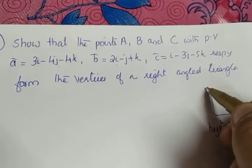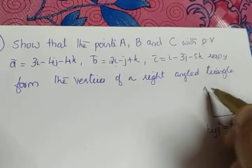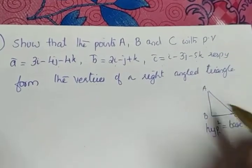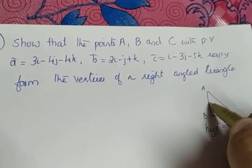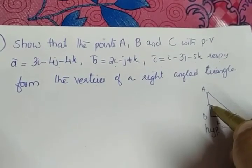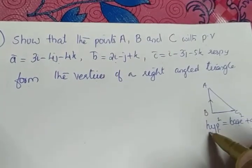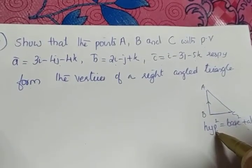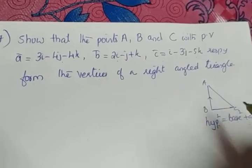Since the vectors are given, if we name the sides as AB, BC, and AC, we need to find the sides. What we have to do is calculate the magnitude of each vector. So we will find vector AB, vector BC, and also vector AC, then find the magnitude of each one.